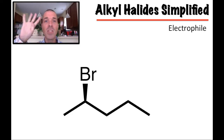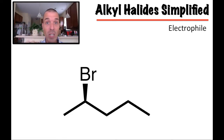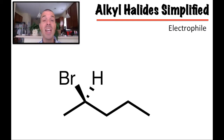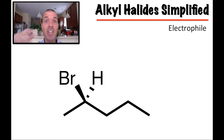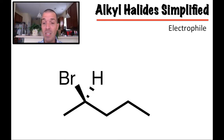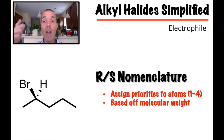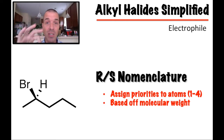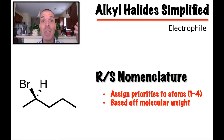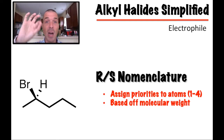Each carbon has four bonds to it. Although we're not always showing all the bonds — for example, a wedge Br and a dash H — we need both of those in order to assign our priorities. In terms of RS nomenclature, we're going to assign priorities to the atoms one through four, since we have a chiral center carbon with four different groups off of it. This assigning is based on molecular weight — we look at all the groups around the outside and label those one to four.